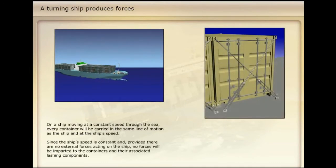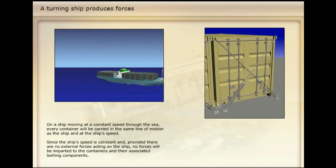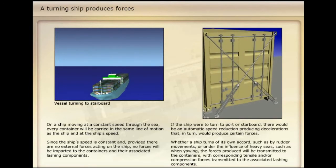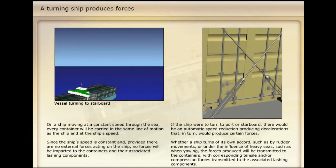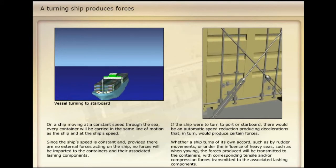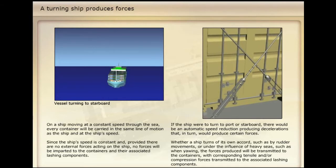On a ship moving at a constant speed through the sea, every container will be carried in the same line of motion as the ship, and at the ship's speed. Since the ship's speed is constant, and provided there are no external forces acting on the ship, no forces will be imparted to the containers and their associated lashing components. If the ship were to turn to port or starboard, there would be an automatic speed reduction, producing decelerations that, in turn, would produce certain forces. Whether a ship turns of its own accord — such as by rudder movements — or under the influence of heavy seas, such as when yawing, the forces produced will be transmitted to the containers, with corresponding tensile and/or compression forces transmitted to the associated lashing components.